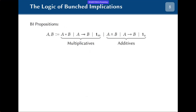So what is this logic we are starting from? BI propositions can be divided into two groups: multiplicatives and additives. Each of these groups has a notion of conjunction, implication, and a constant for truth.